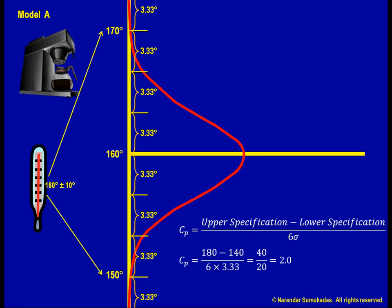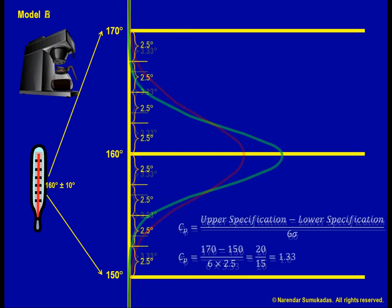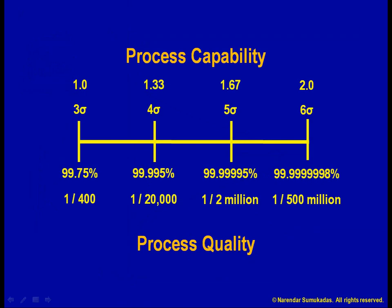Often the only reasonable option to increase process capability is to reduce process variability. Looking at the capability scale, even a small increase in capability, that is, even a small reduction in process variability, can have a tremendous payoff in terms of improved quality.